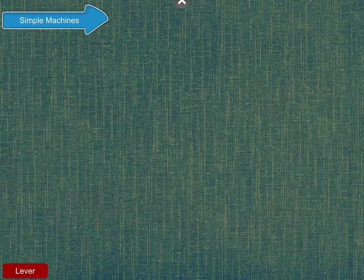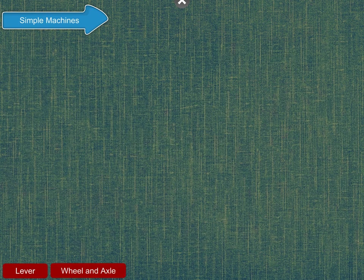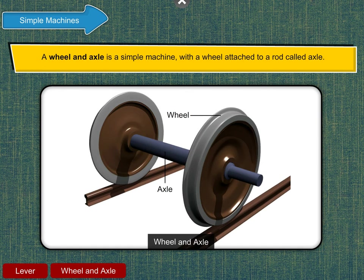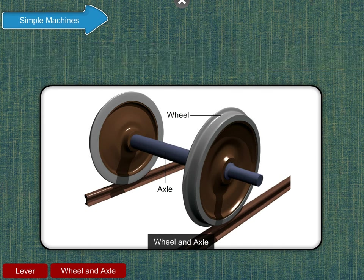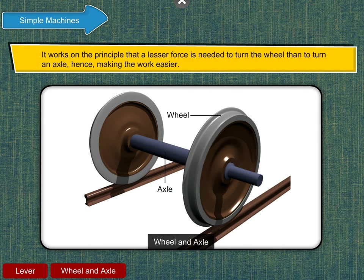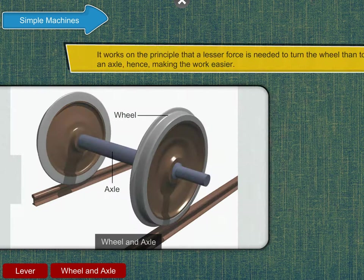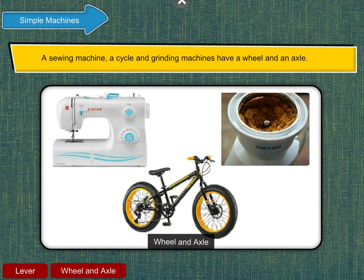A wheel and axle is a simple machine with a wheel attached to a rod called axle. It works on the principle that a lesser force is needed to turn the wheel than to turn an axle, hence making the work easier. A sewing machine, a cycle and grinding machines have a wheel and an axle.